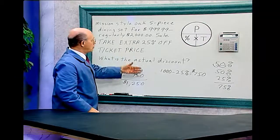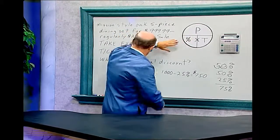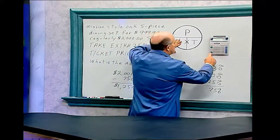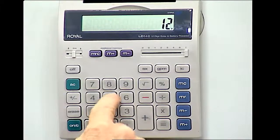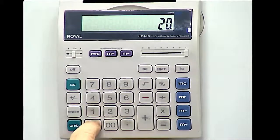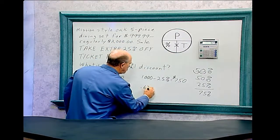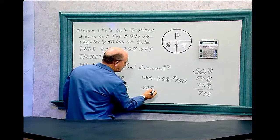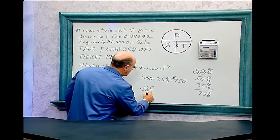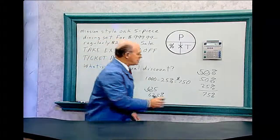Now let's find the actual discount percentage. The part is $1,250 divided by the total of $2,000, which equals 0.625. Moving the decimal point two places gives us 62.5%. That is the actual discount — not 75%. The discount is 62.5%.